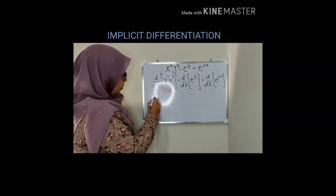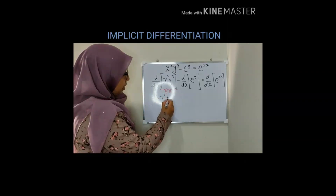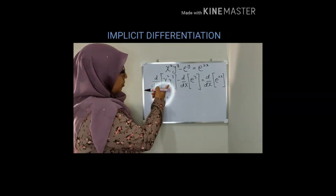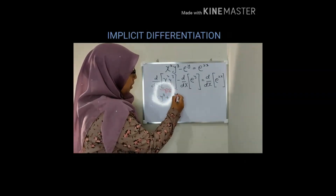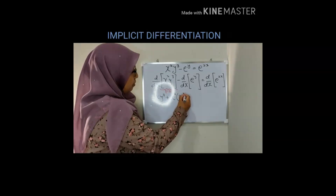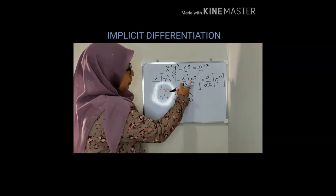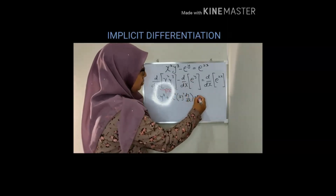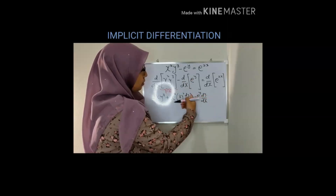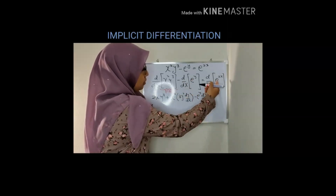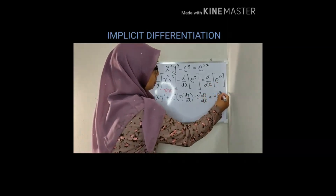Applying the product rule gives: 2x y cubed, plus x squared times 3y squared dy/dx. Then differentiate the next term: e to the y times dy/dx. Differentiating the right hand side gives 2e to the 2x.